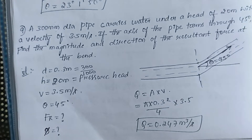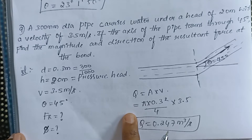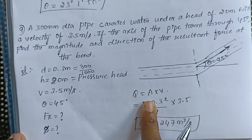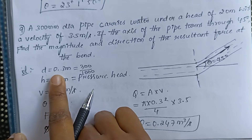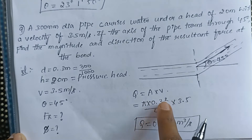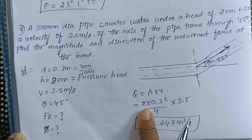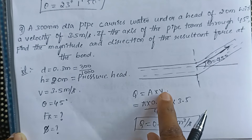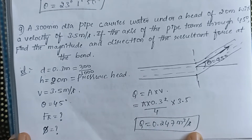Now let us start solving the problem. First, we find the discharge of the pipe using the general equation Q = A × v. The area is pi d squared by 4. Substituting d = 0.3 and v = 3.5, on simplifying we get Q = 0.247 cubic meters per second, which is the discharge in the pipe.